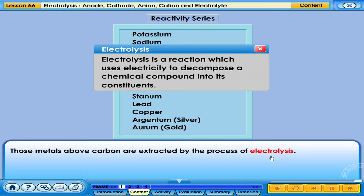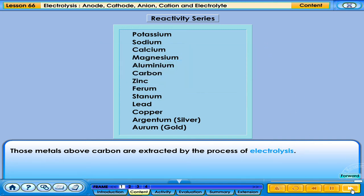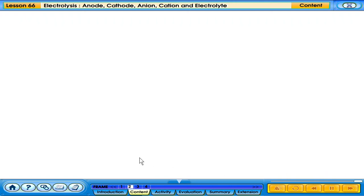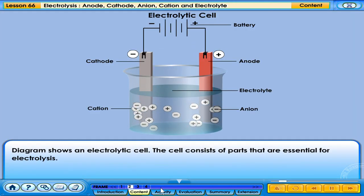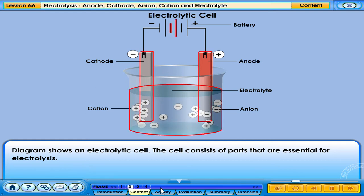Electrolysis is a reaction which uses electricity to decompose a chemical compound into its constituents. The diagram shows an electrolytic cell, which consists of parts that are essential for electrolysis.